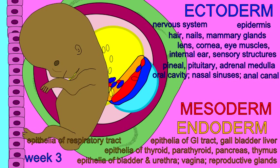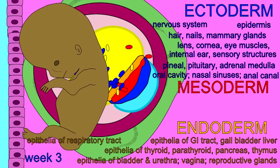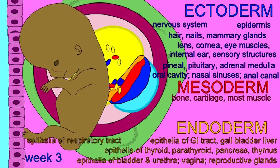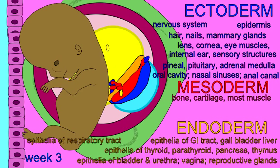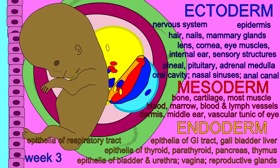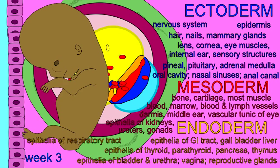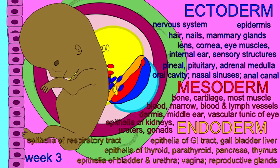From mesoderm develops skeletal muscle, cardiac muscle, most smooth muscle, cartilage, bone, the dermis of the skin, the middle ear, the vascular tunic of the eye, the epithelium of the kidneys, and the epithelium of the gonads.